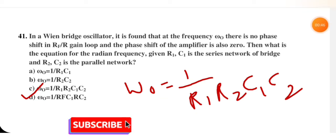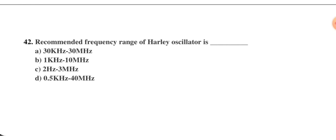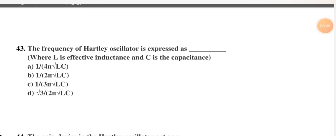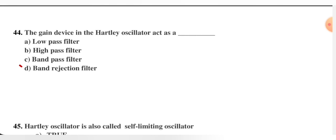The recommended frequency range of the Hartley oscillator is 30 kHz to 30 MHz — so that is the right option. The frequency of the Hartley oscillator is expressed as f = 1 / (2π√LC), where L is the effective inductance and C is the capacitance, since it is an LC oscillator. The gain device in the Hartley oscillator acts as a band-pass filter, so option C is correct.